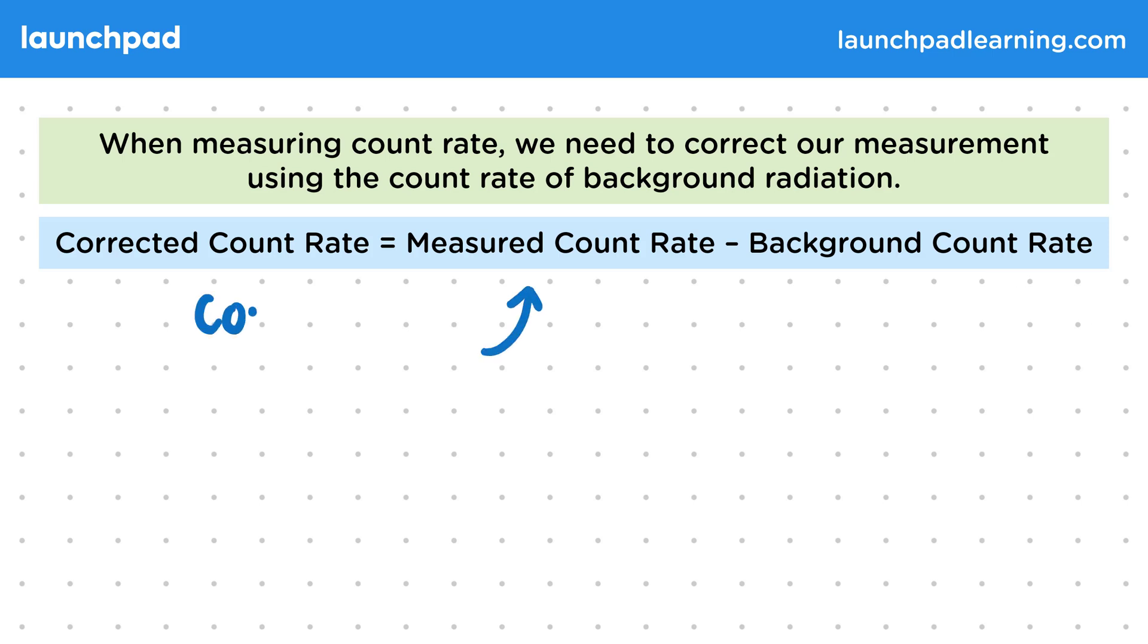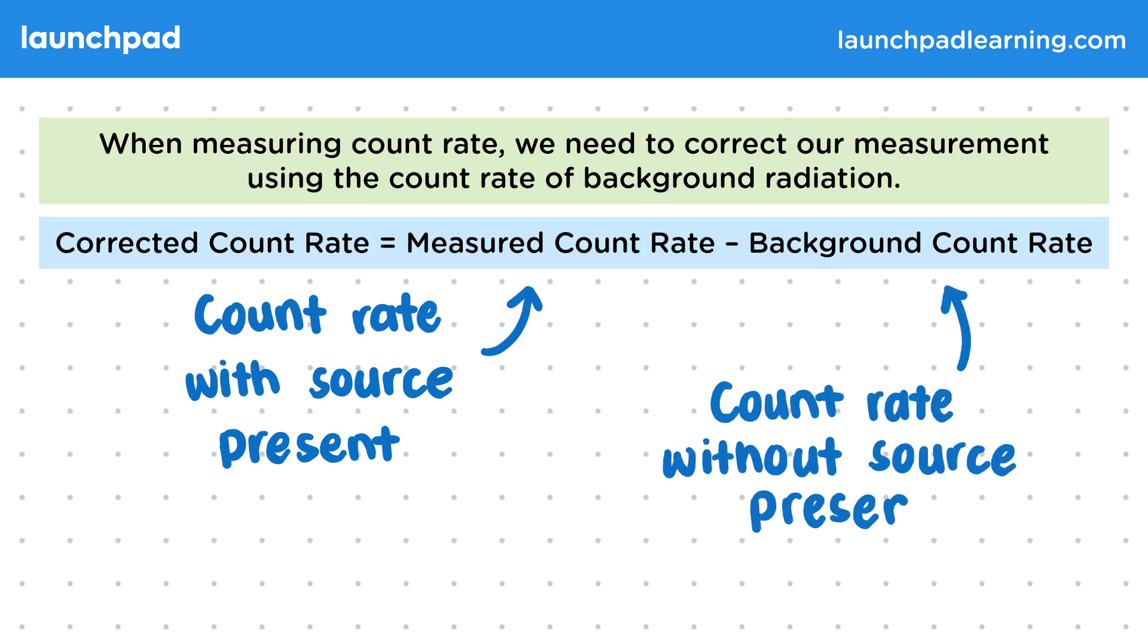The measured count rate is the count rate with the source present and the background count rate is the count rate without the source present. This equation works by eliminating the detected radioactive particles or waves due to background radiation from the measurement, so we only have the count rate detected from the source remaining.